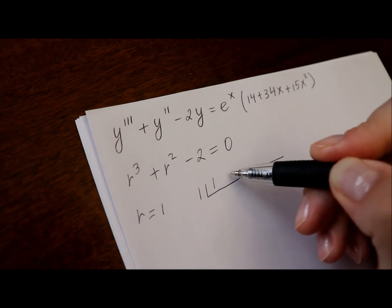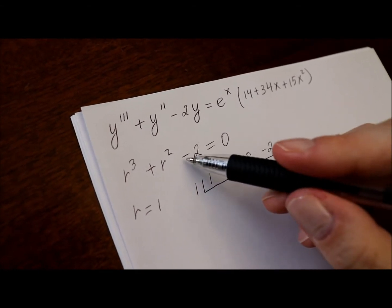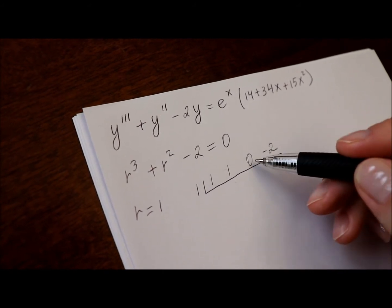Then we separate it from the coefficients of the polynomial, which are 1, 1, 0, and negative 2. We have a 0 because there is no first power of r, but we must include that coefficient.